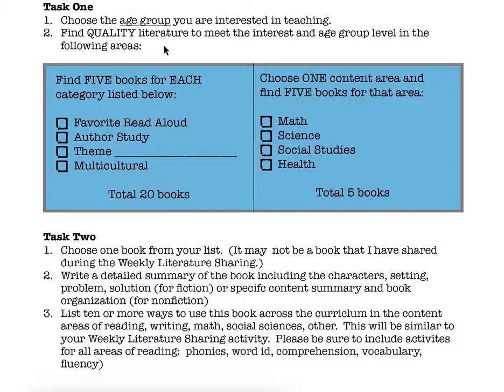Then you're going to go looking for literature. I recommend going to the library or a bookstore where you can actually browse through the books physically. You can also use some online sources: Google Books, Scholastic, Amazon, and Book Wizard on Scholastic's website. You want to choose five books that are your favorite to read out loud to this age of learner. You're also going to pick one author and pick five of that author's books — pick one author and five books for that author.